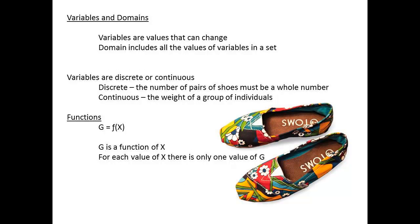Let's introduce a few terms for the math. Statistics will try and relate sets of numbers to look for a relationship. A variable is a value that can change. All the values in a set are said to be in the same domain. The variables can be discrete, such as counting the number of pairs of shoes, or the variables can be continuous, such as measuring the weight of a group, when there are an infinite number of possibilities.